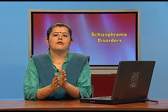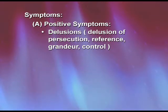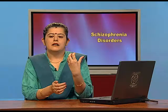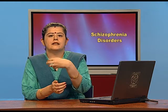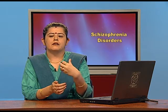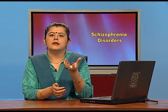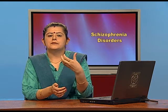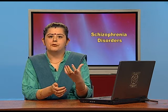We have various categories of delusions. First is persecution. Persecution refers to when somebody very strongly feels that there is an investigative agency or a spy that is after them and wants to kill or harm them. There is no reality to it, no actual event happening, but the person is very strongly holding on to this belief that somebody is following them, spying on them, and they need protection. That is persecution.